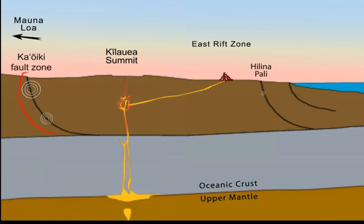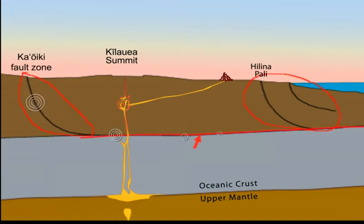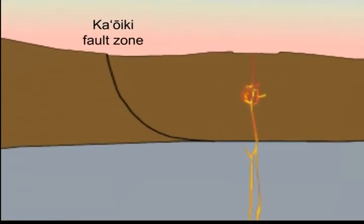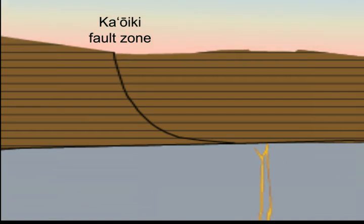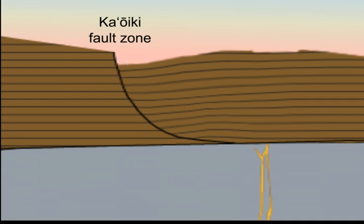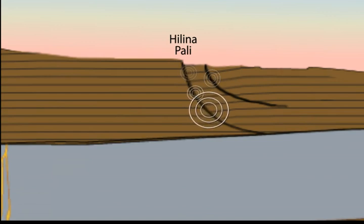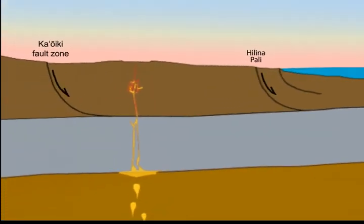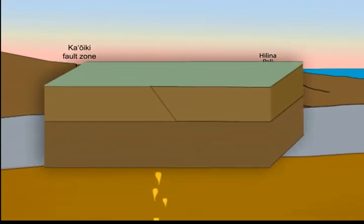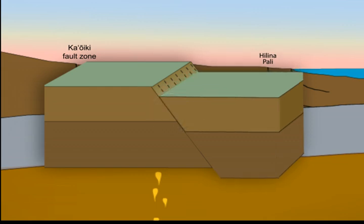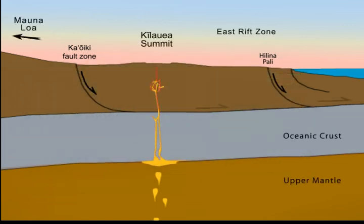Second are earthquakes occurring on faults within the volcanic edifice and at the boundary between the volcano and the ocean floor beneath it. Along the Kauaiki fault zone on the Big Island, the Kilauea side has moved down relative to the Mauna Loa side. Along the Helena Pali, the coastal block has dropped relative to the Kilauea block. Faults of this type are called normal faults, driven by the weight of the volcanic island. Earthquakes on these faults are generally smaller than magnitude 5, unless they trigger the underlying fault between the volcano and the old ocean floor.